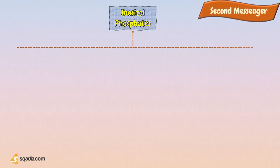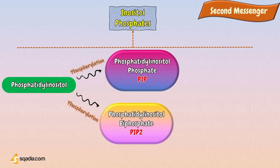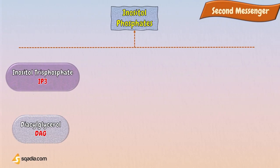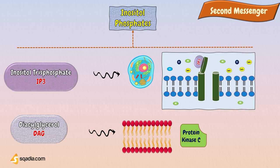Third in our list of second messengers is inositol phosphates. Phospholipids are an important structural component of the cell, but they also have a very important role in cell signaling. Phospholipids called phosphatidylinositol can be phosphorylated and sliced in half, releasing two segments. Phosphatidylinositol is successively phosphorylated to form phosphatidylinositol phosphate, then phosphatidylinositol bisphosphate, PIP2. Phospholipase C catalyzes the breakdown of PIP2 into inositol trisphosphate, IP3, and diacylglycerol. Both fragments can act as second messengers. Diacylglycerol stays in the plasma membrane and can activate protein kinase C, while IP3 diffuses into the cytoplasm and binds to ligand-gated calcium channels, releasing calcium ions that continue the signal cascade.